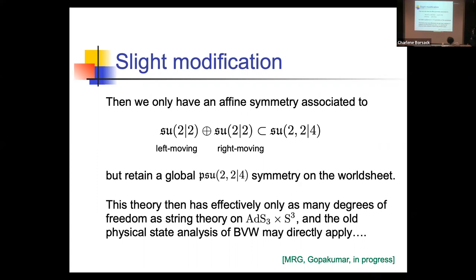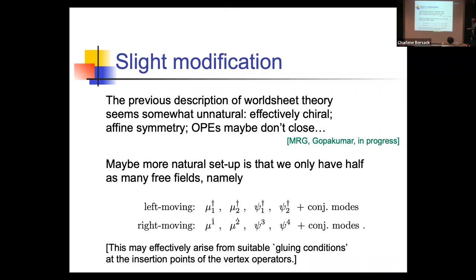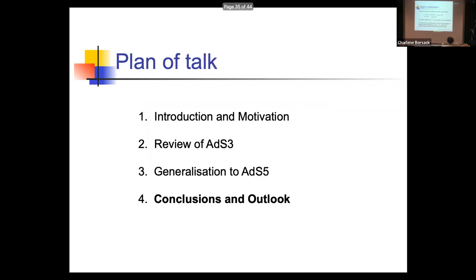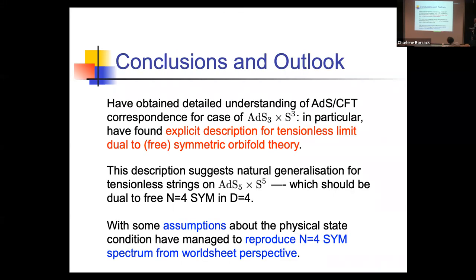More recently we have realized that with this picture there are actual guesses for what the BMN operators would be, and they would have the right dispersion relation to match what you'd expect in the tensionless limit of BMN. We do believe there is something right about this idea, but we're not exactly sure how this comes about from first principles — this is very much work in progress. In summary: we have a very good understanding of ADS-3, a detailed example where we really understand both sides exactly. We should use this as a blueprint for ADS-5.